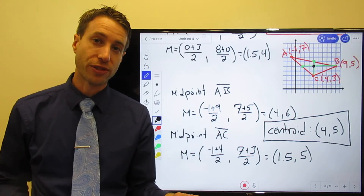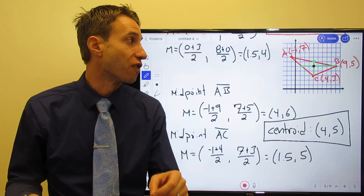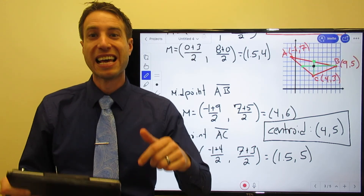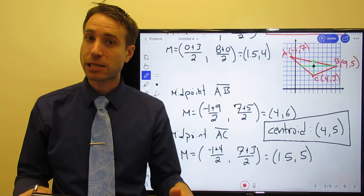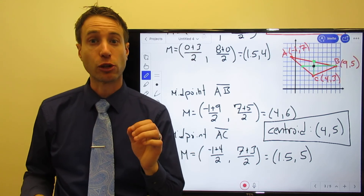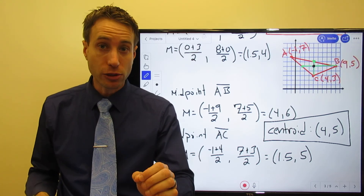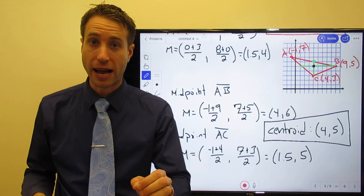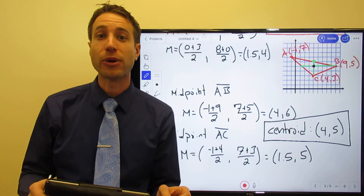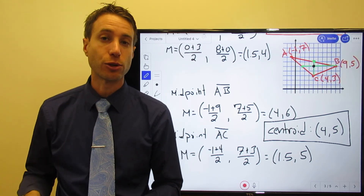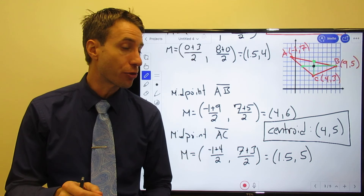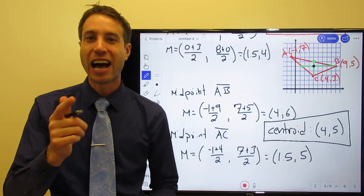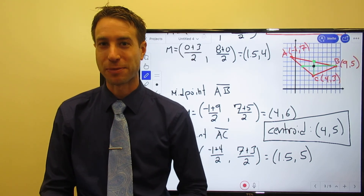So that's how we find the centroid and use the Centroid Theorem to solve problems. On the next page of the notes we'll take a look at the altitudes of triangles and how we can use them to find the orthocenter. I'll meet you guys on the next page.